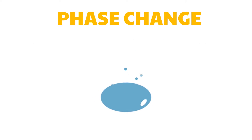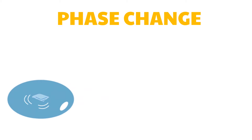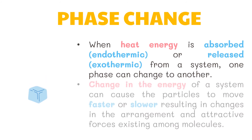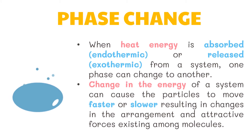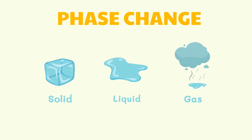Most substances can exist in three phases, depending on temperature and atmospheric pressure. Some substances, like water, can exist in all three phases at ordinary conditions. When heat energy is absorbed, also referred to as endothermic, or released, or exothermic from a system, one phase can change to another. Change in the energy of a system can cause the particles to move faster or slower, resulting in changes in the arrangement and attractive forces existing among molecules. Phase change is a process of changing from one physical state of matter to another. Phase changes are physical changes because they only affect physical appearance, not chemical makeup.